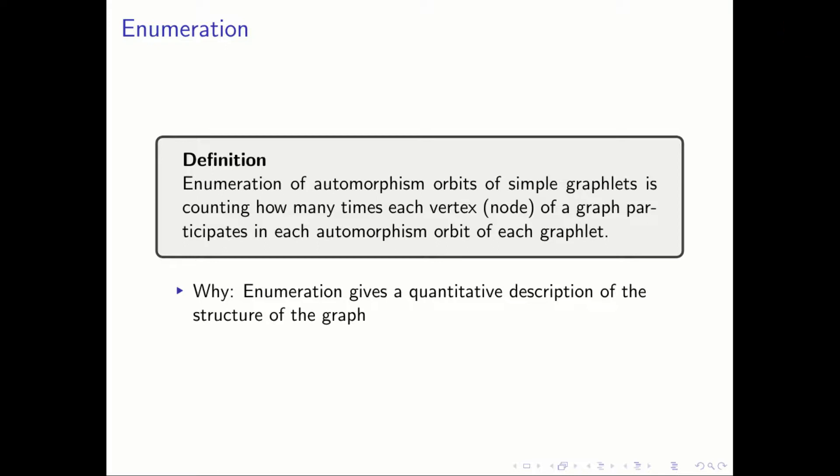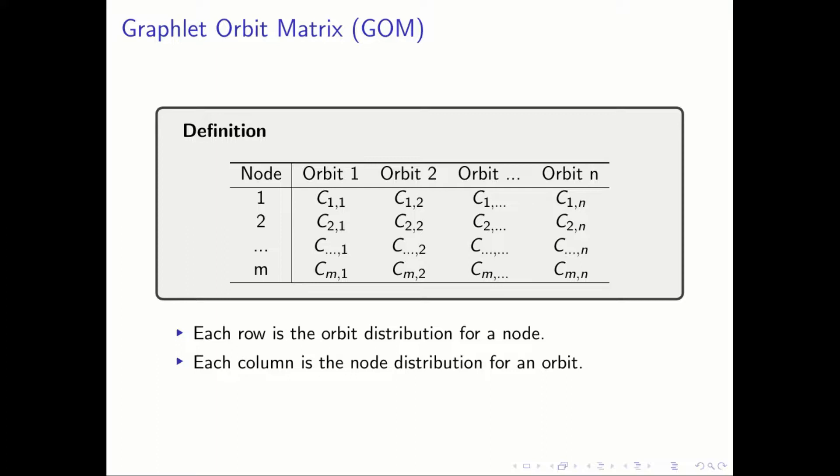Enumeration in this context is simply counting how many times each node of our original graph participates in each automorphism orbit from each graphlet under consideration. This enumeration provides a quantitative description of the structure of a graph. The GOM, or graphlet orbit matrix, is essentially a table where the rows are the nodes, and the columns are the orbits from the graphlet automorphisms, and the entries are the corresponding counts.